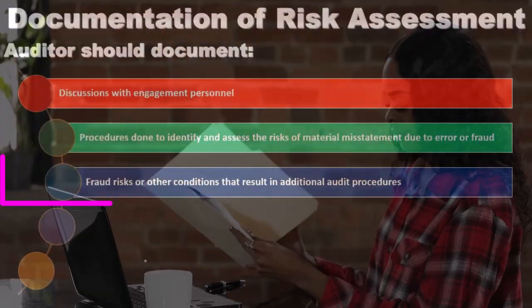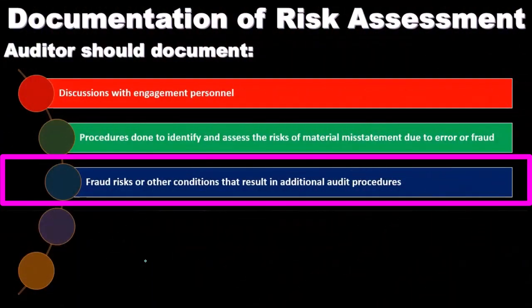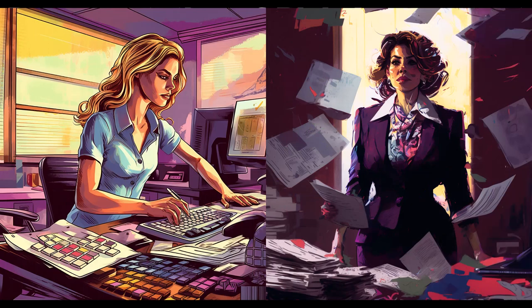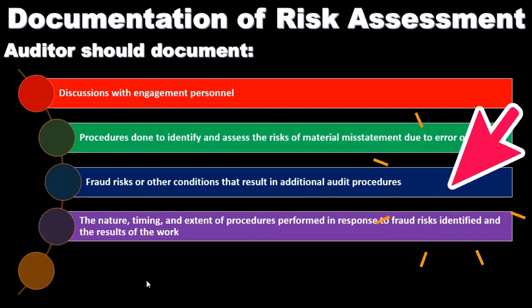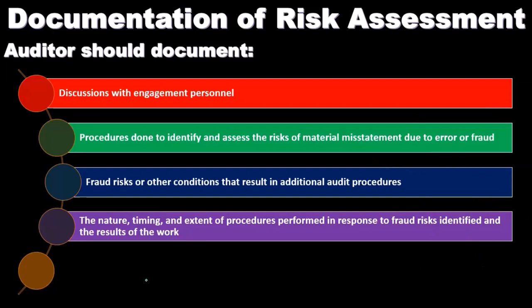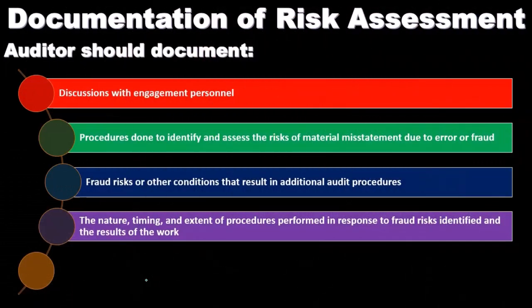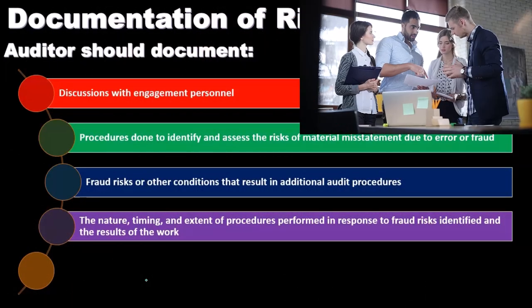We also document fraud risk or other conditions that result in additional audit procedures. If testing results suggest higher fraud risk, we add more procedures aligned with that risk and document that information as well. We document the nature, timing, and extent of procedures performed in response to identified fraud risks, and the results of that work. We will look at this documentation in more depth when we get to substantive testing of specific accounts and assertions.